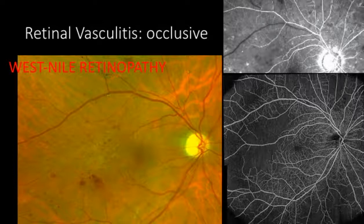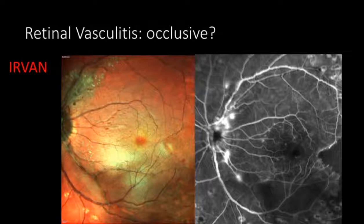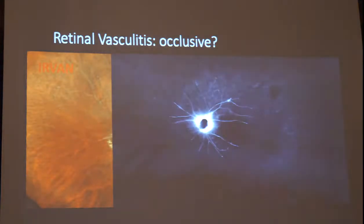Some occlusive vasculitis can be associated with viral infection, as in this case. Other cases of occlusive vasculitis are idiopathic, such as IRVAN, which in fluorescence angiography reveals the classic aneurysm around the optic disc but also non-perfusion in the macular area. You must be aware that in IRVAN the grade of non-perfusion may be very severe, with aneurysms on the optic nerve, exudation, vessel sclerosis, and very severe non-perfusion.